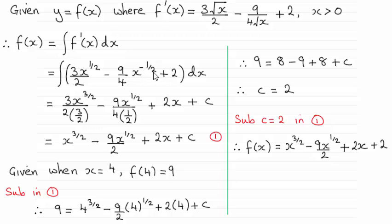Similarly, when you get to this term, add 1 to the power, we end up with x to the power half, and then we divide by that new power, a half. And then with a constant like this one, you should be aware that it's just going to be 2x.